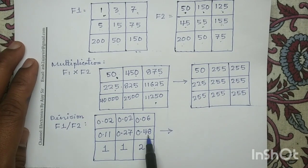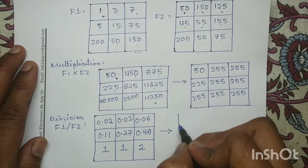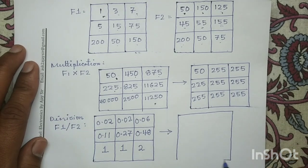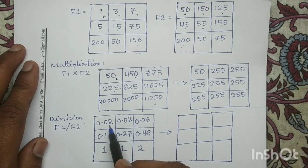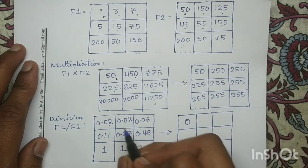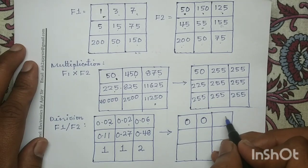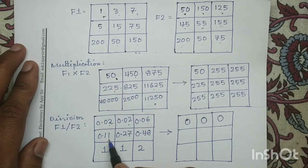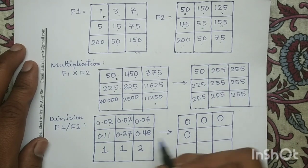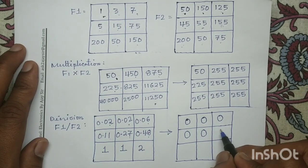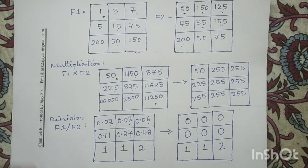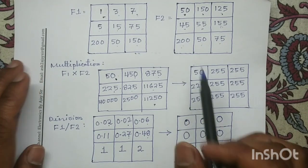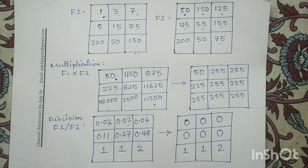In the next step, all floating point numbers are rounded off to the nearest integer: 0.02 rounds to 0; 0.02 rounds to 0; 0.06 rounds to 0; 0.11 rounds to 0; 0.27 rounds to 0; 0.48 rounds to 0; and in the last row it is 1, 1, and 2. So for the given images f1 and f2 we have computed the addition, subtraction, multiplication, and division operations. With this the question is over. Thank you.